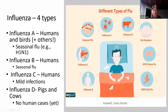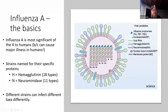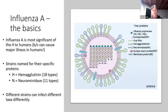From here on out, we're going to be focused on influenza A, which is what bird flu falls into. Influenza A really is the most significant, primarily because of its threat to humans — it can cause major illness in humans. Millions of people globally a year die from influenza.